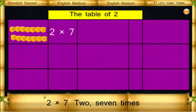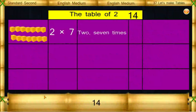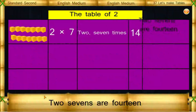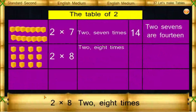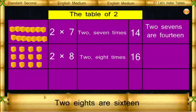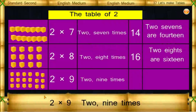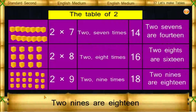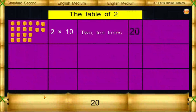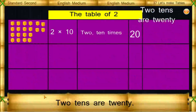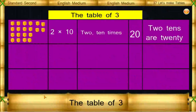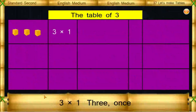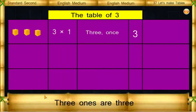2 7's are 14. 2 8's are 16. 2 9's are 18. 2 10's are 20. The Table of 3.